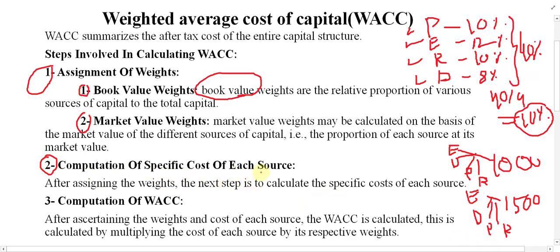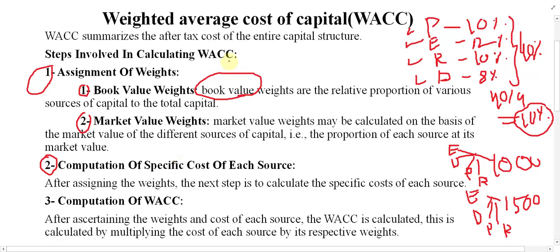Step number two is the computation of the specific cost of each source of funds. We need to find out the cost of equity, cost of preference, cost of retained earnings, and cost of debt. This has already been covered in the previous stage. For calculation of WACC, these costs will be given directly in the question.